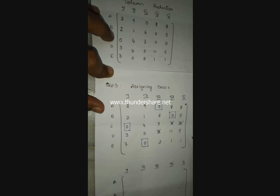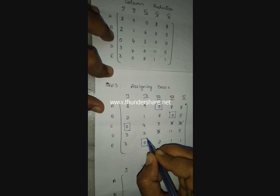Since not all jobs can be assigned to persons, we need to use the Hungarian technique. We need to draw lines to cover all zeros. Mark the rows and columns, then draw lines through marked columns and unmarked rows.